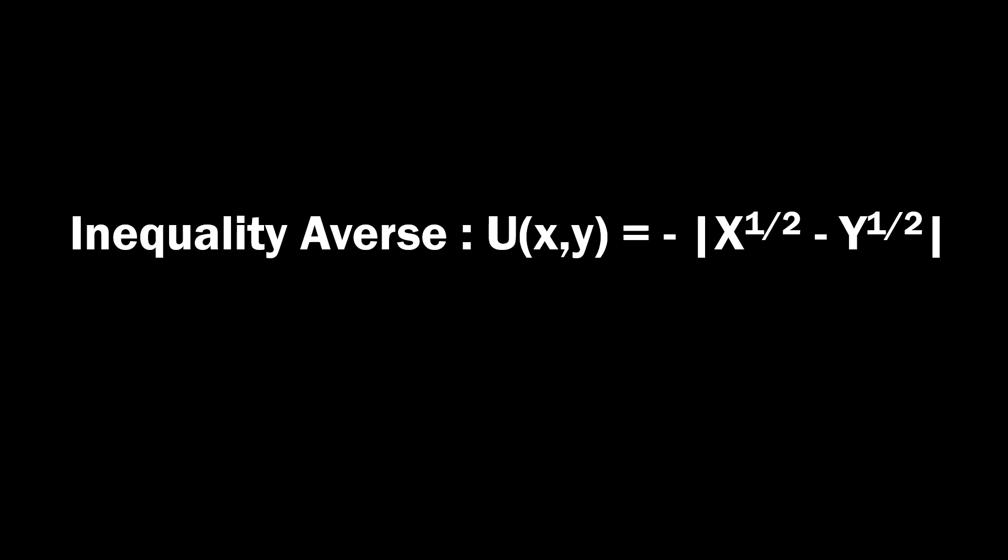We're inequality averse. If X is somehow larger than Y or Y is somehow larger than X, that's a bad thing. We want to get those two numbers as close to each other as possible. We end up taking the absolute value of this and then having it be a negative number so that we're worse off the bigger that absolute value of that difference actually is in this setting.